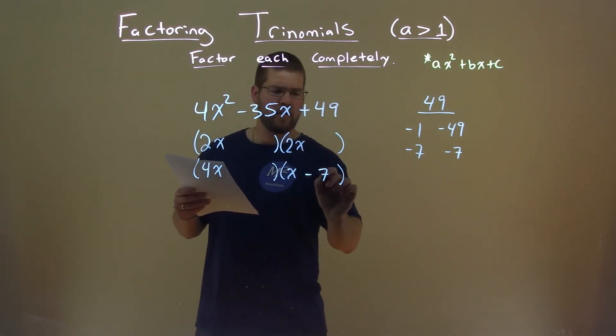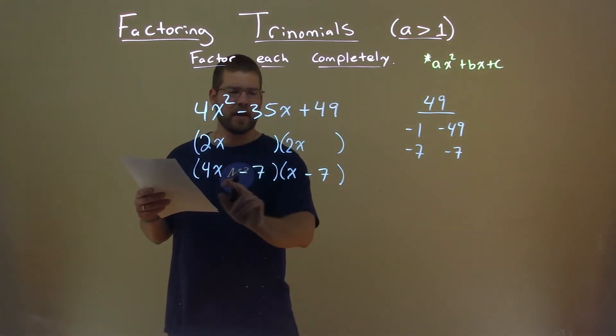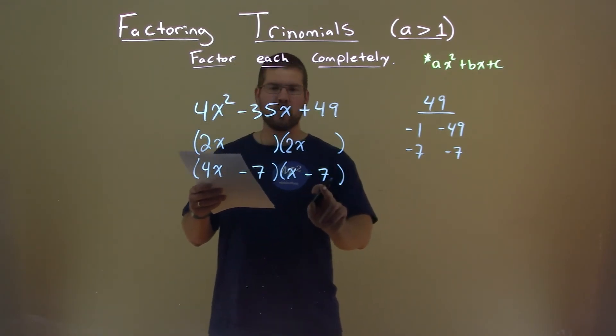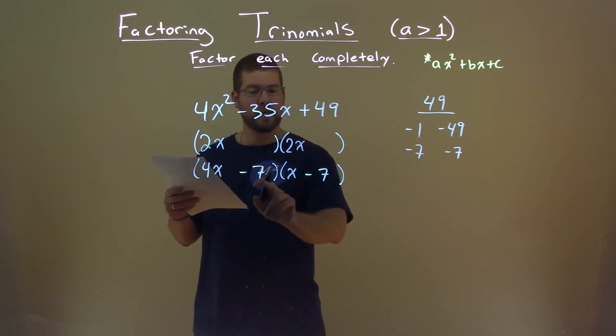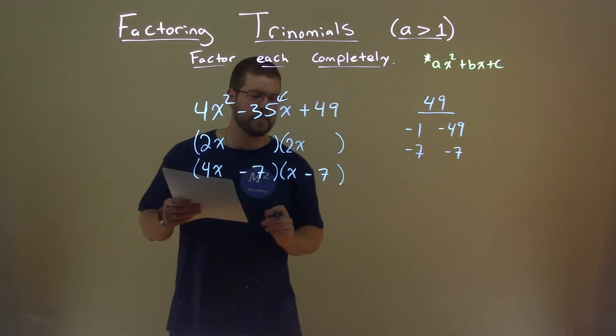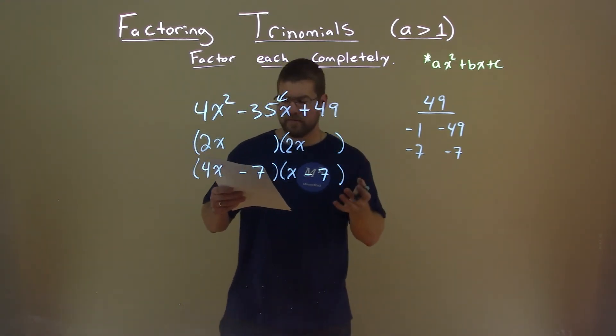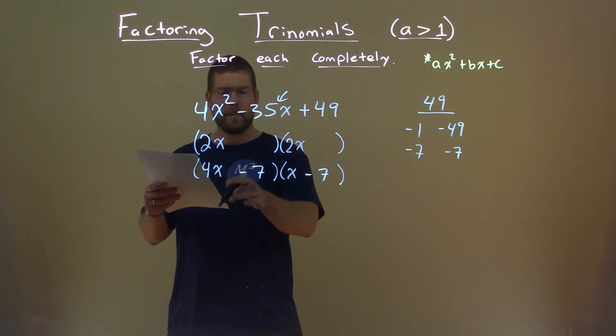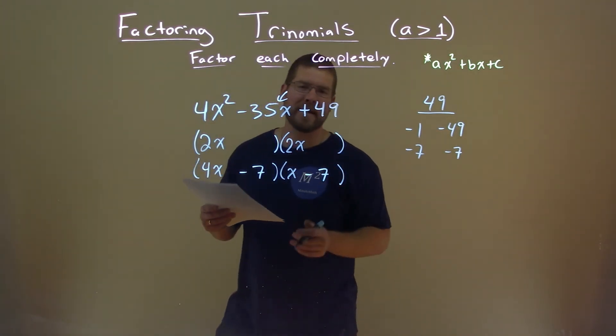And so, our values here, 4x times a negative 7 is a negative 28x, plus a negative 7x gets us a negative 35x. The b value was the clue. And so there we have our final answer, 4x minus 7 times x minus 7.